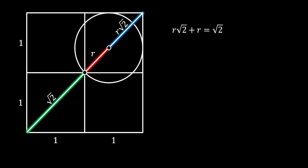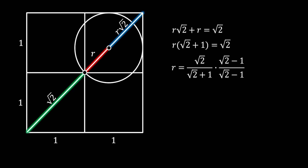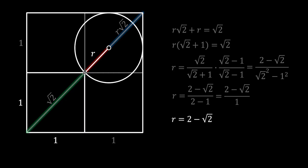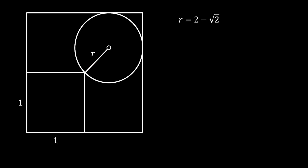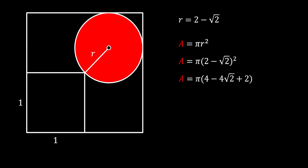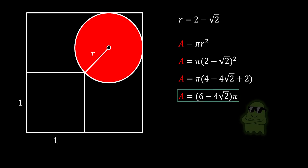We can write this down as an equation, then isolate the common term on the left, divide, and rationalize. On the numerator we multiply the terms and get the difference of squares in the denominator. Working through this and simplifying, we find that the radius must be equal to 2 minus square root of 2. The area of the circle is then pi r squared — substituting r, expanding using the square of a binomial, and simplifying gives us the area equal to (6 minus 4 square root of 2) times pi.